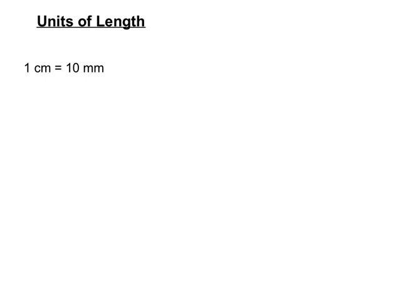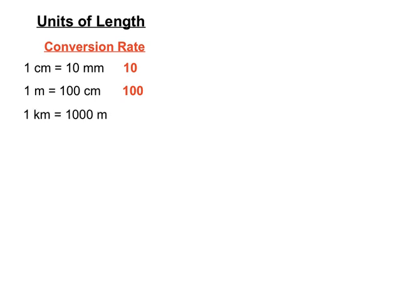The units of length: 1 cm equals 10 mm, so that's a conversion rate of 10. Depending on whether we're moving from millimetres to centimetres or the other direction, we'll either be multiplying or dividing by 10. With 1 m equaling 100 cm, the conversion rate is 100. And 1 km equals 1000 m, so the conversion rate there is 1000, either multiplying or dividing by 1000.